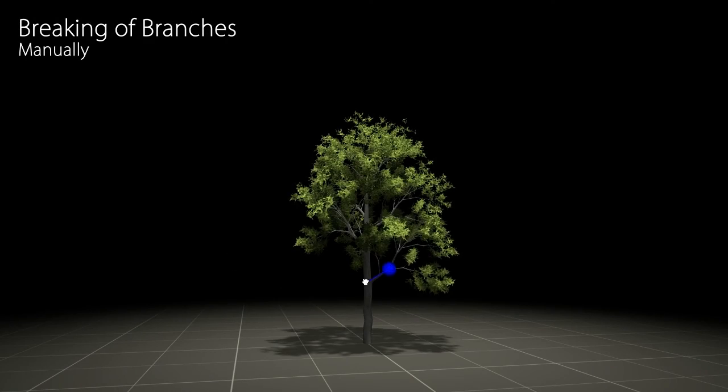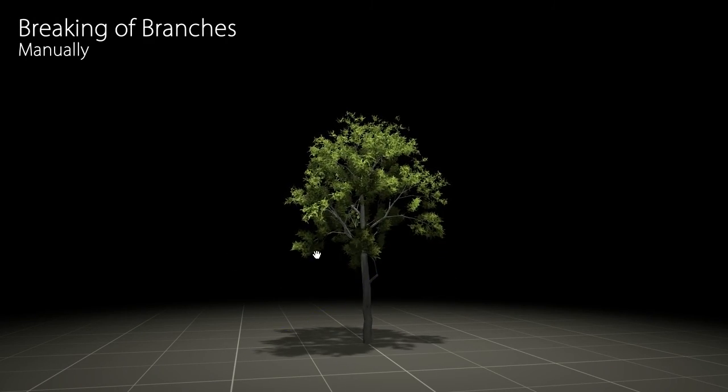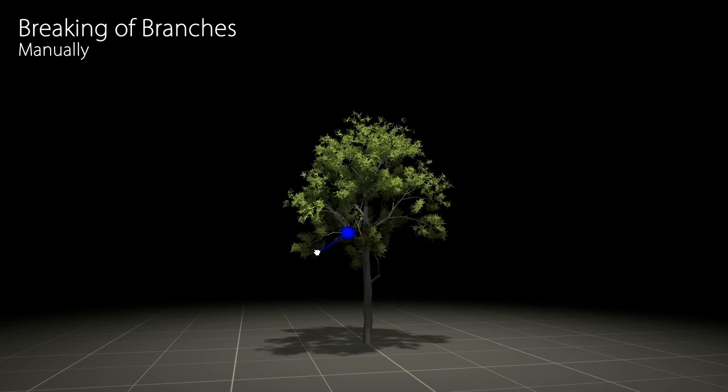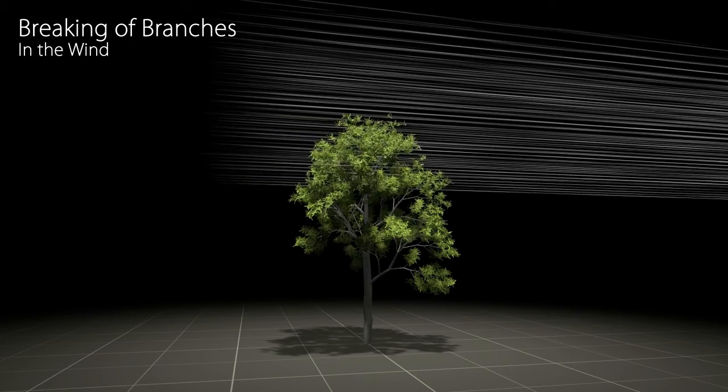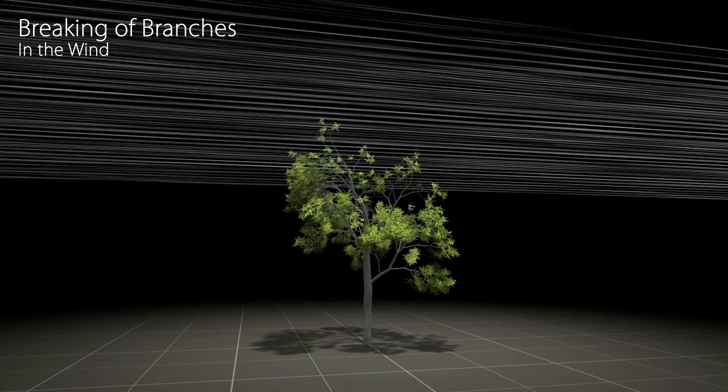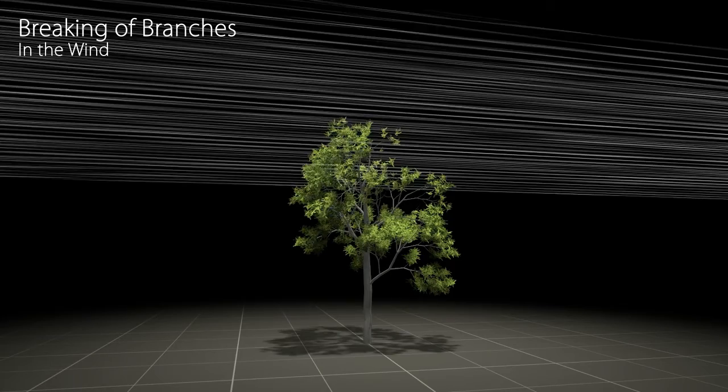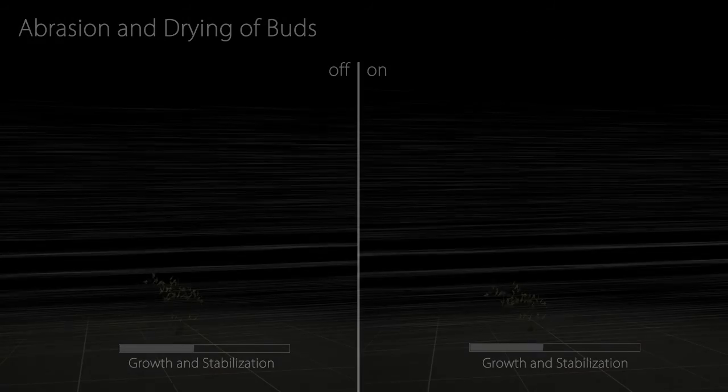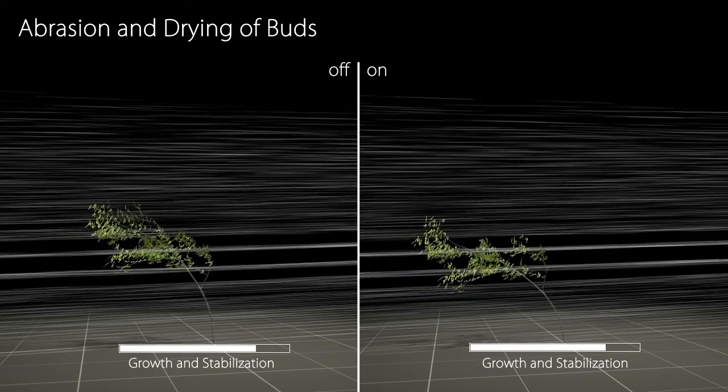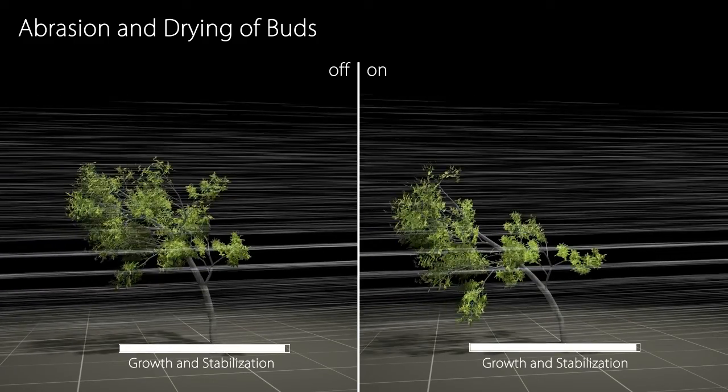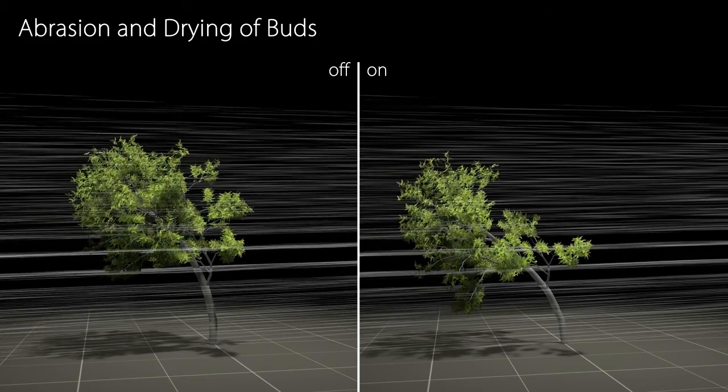Our system supports the breaking of branches when the stress on the branching structure exceeds a certain threshold. Due to a precise collision response of branches, even more complex phenomena such as the abrasion and the drying of buds can be modelled in our framework.